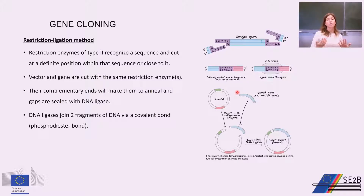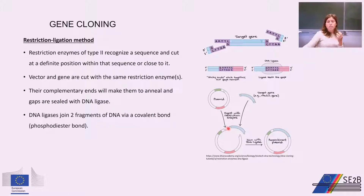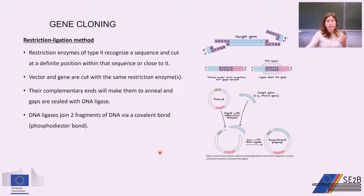There are many gene cloning methods. The traditional one is the restriction-ligation method. Restriction enzymes of type 2 recognize a specific sequence and cut at a defined position within or near that sequence. Both the vector and the gene are cut with the same restriction enzyme, their complementary ends anneal, and the gaps are sealed by an enzyme called DNA ligase.